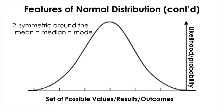Another feature of normal distribution is that all three central tendency measures we've learned — mean, median, and mode — have the same location, which is exactly in the center of the normal distribution. And the normal distribution is perfectly symmetric around these three central tendency measures.